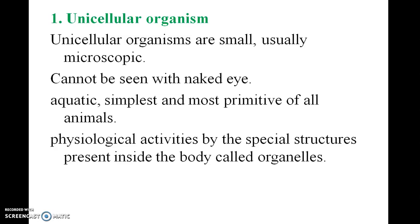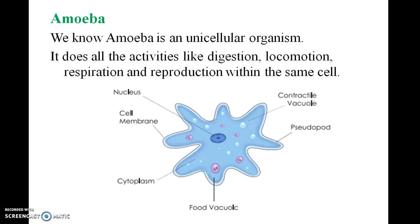Unicellular organisms are small and usually microscopic. For example, amoeba is a unicellular organism. It carries out all activities like digestion, locomotion, respiration, and reproduction within the same single cell. It has a finger-like projection called pseudopodia. It has a contractile vacuole that helps in excretion.